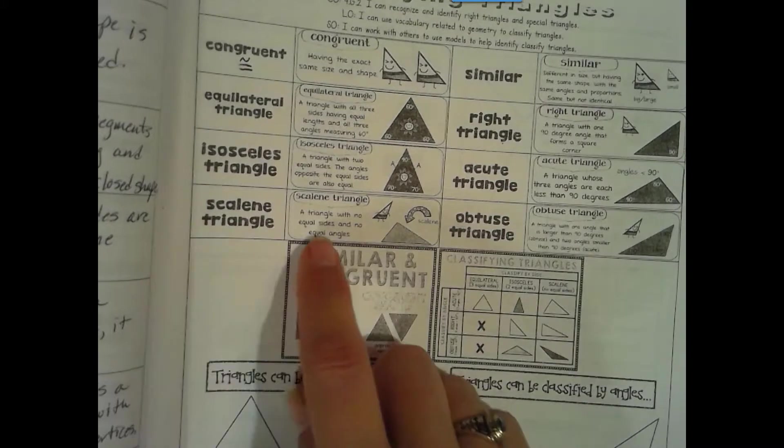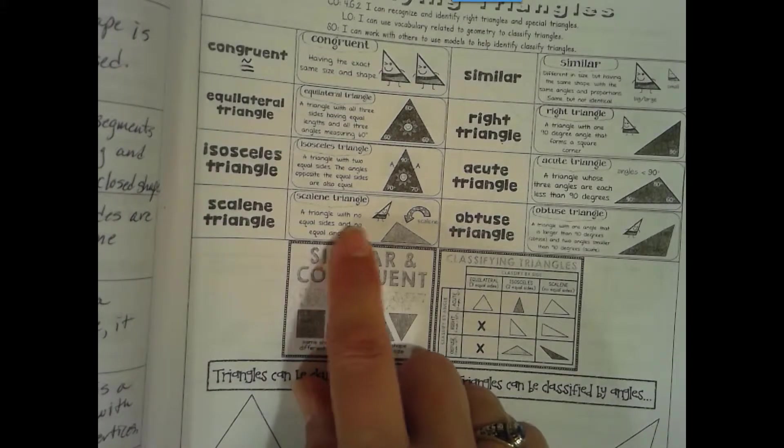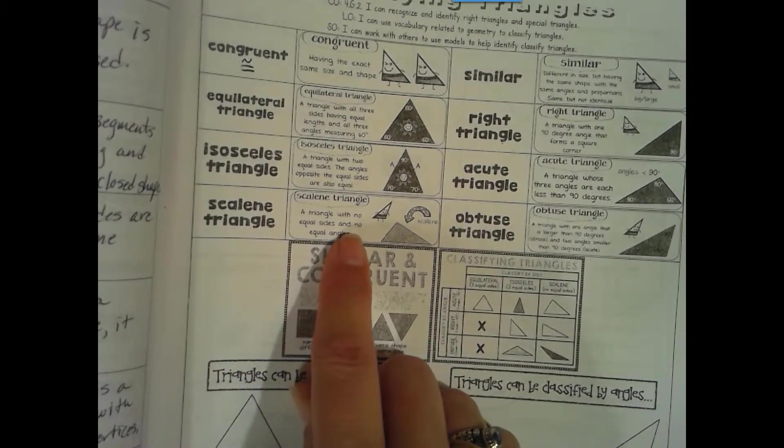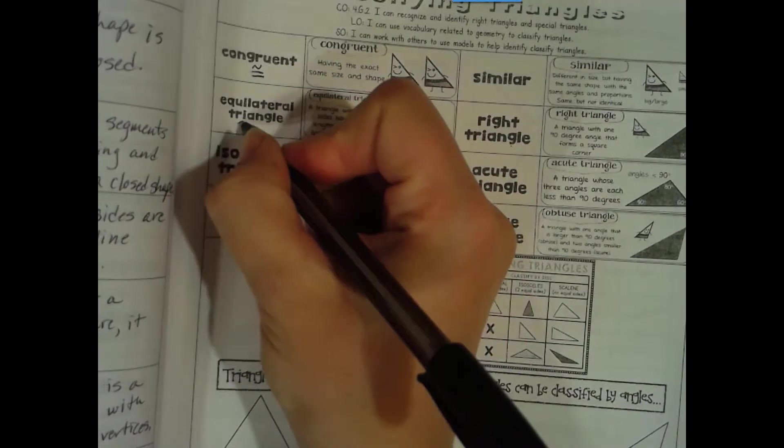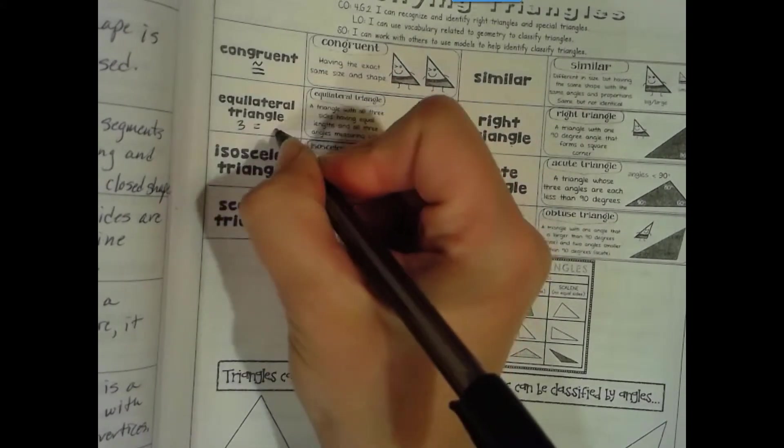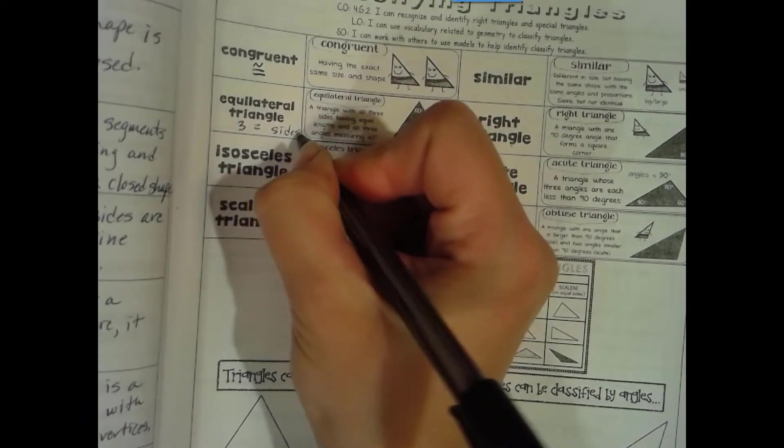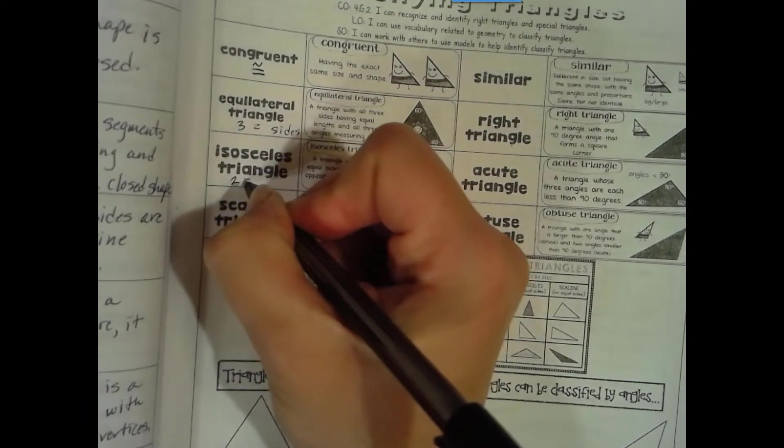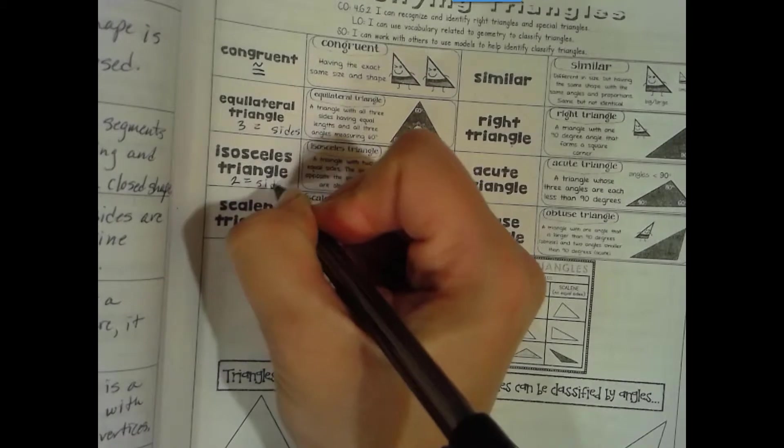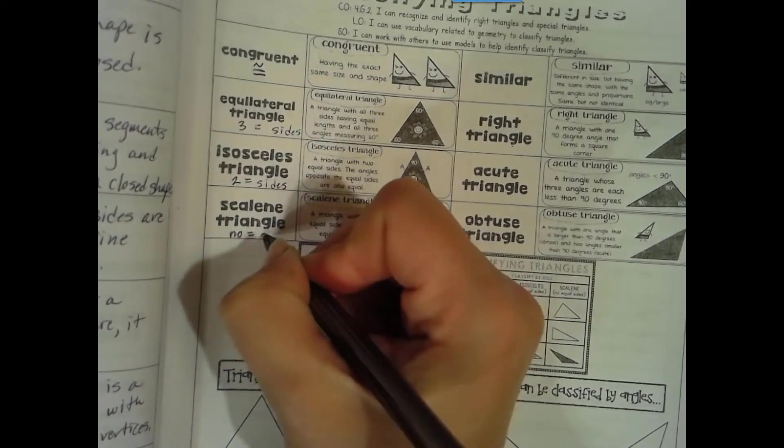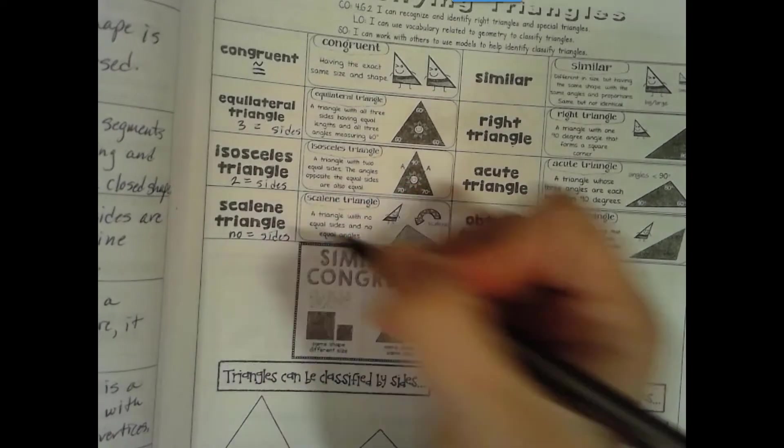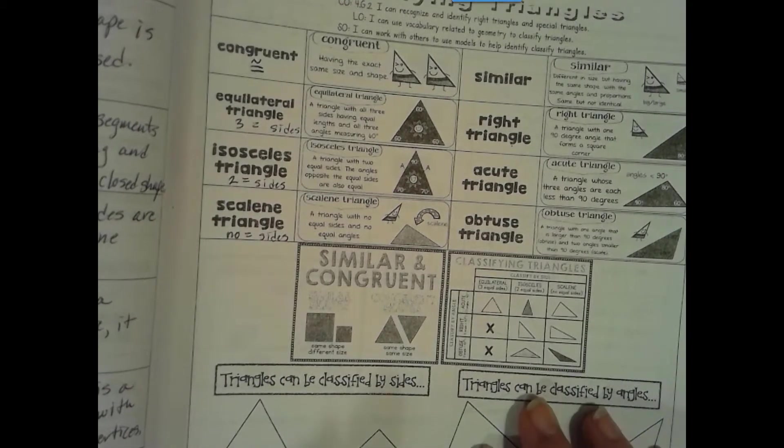Scalene triangle: a triangle with no equal sides and no equal angles. So this would have three equal sides, two equal sides, no equal sides. So those are the things we want to remember for those.